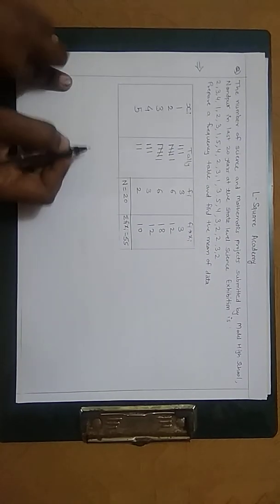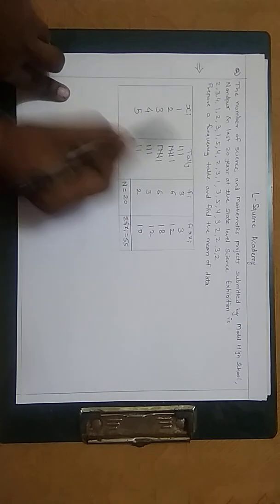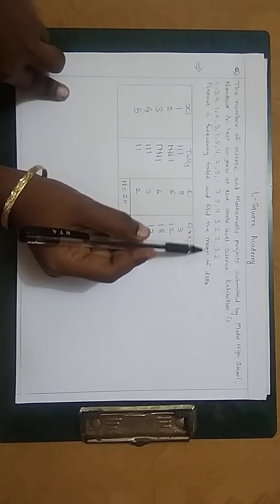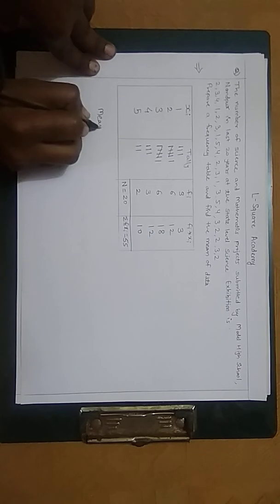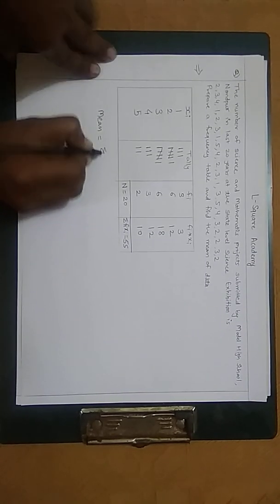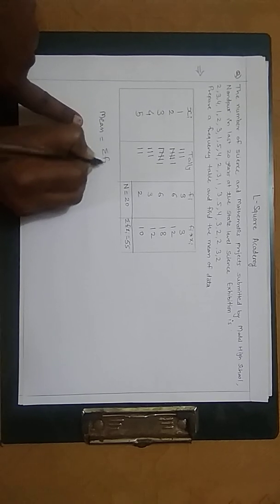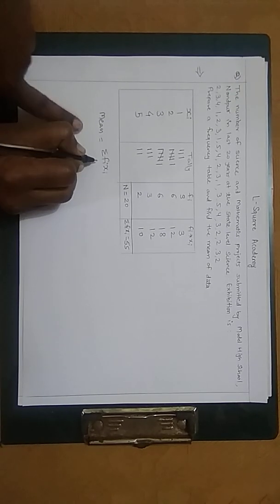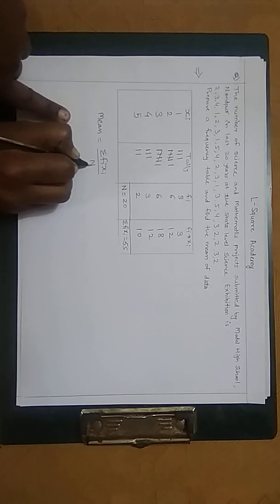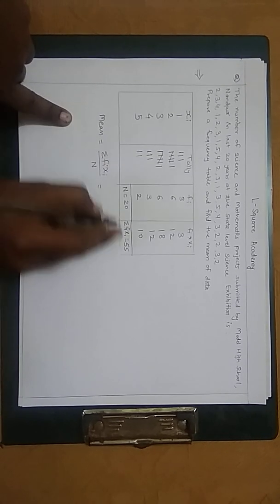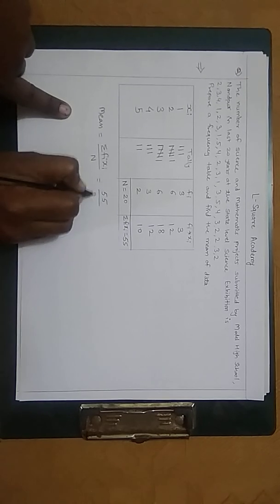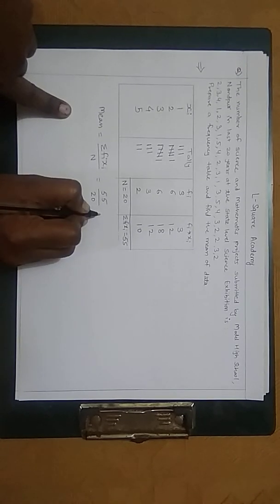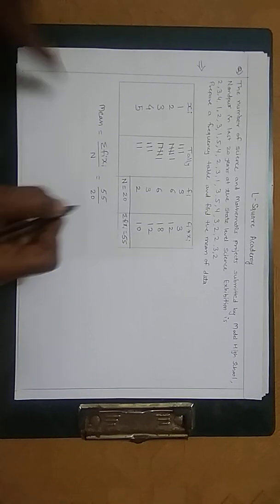Now here we've prepared a frequency table, and now we have to find the mean of data. When we calculate the mean of data, the formula is: mean equals summation of fi xi divided by n. Summation of fi xi is 55, and the value of n is 20. Now here we divide it.